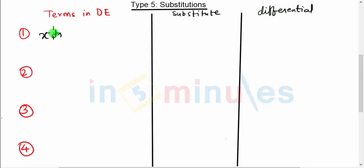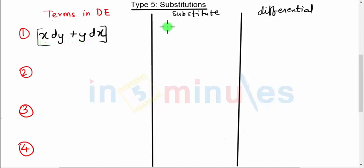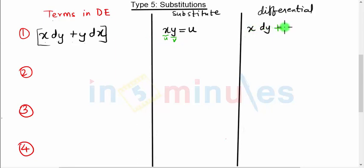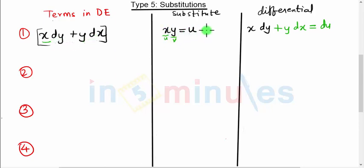The first substitution: if you see the terms x dy plus y dx in your differential equation, substitute x times y equal to u. If we take the derivative of xy, by the product rule (u·v rule), we keep u as it is and differentiate v, then keep v as it is and differentiate u, giving us x dy plus y dx equal to du.